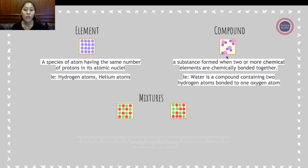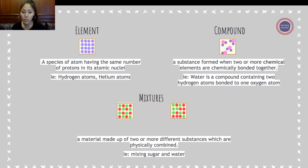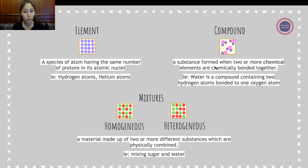The next piece is mixtures. A mixture is made up of two or more different substances which are physically combined. An example would be mixing sugar with water. There are two different types of mixtures: homogeneous mixtures as well as heterogeneous mixtures.